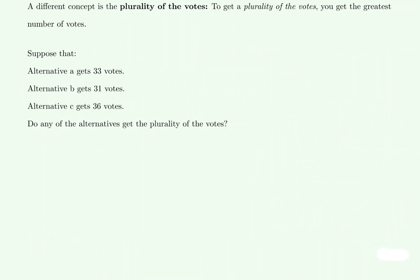We just saw the definition for majority of the votes and an example. Another definition to keep in mind, distinct from that, is the idea of the plurality of the votes. If you have the plurality of the votes, all that means is you get the greatest number of votes — it doesn't necessarily have to be the majority or greater than majority, but it might be. Plurality is just saying who got the most votes, not who represents a certain percentage of the overall voting class.